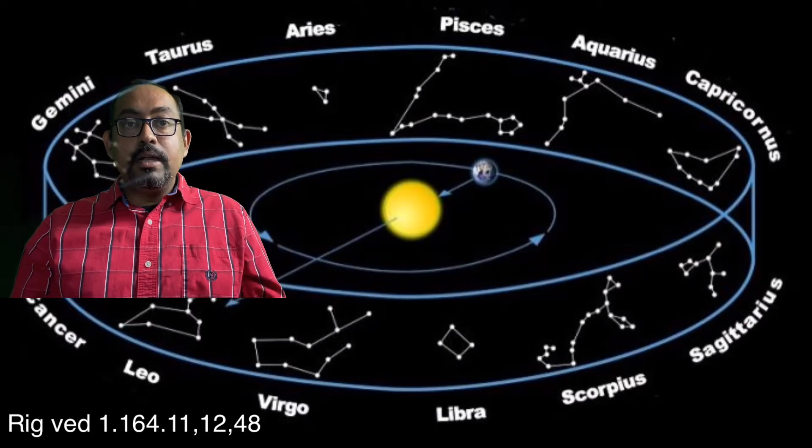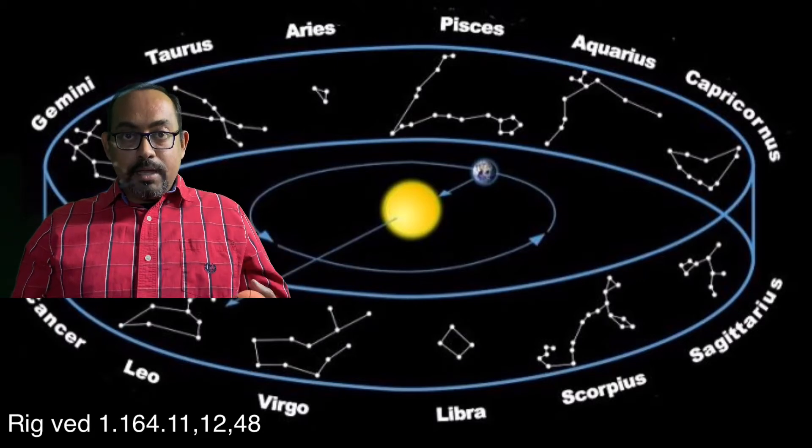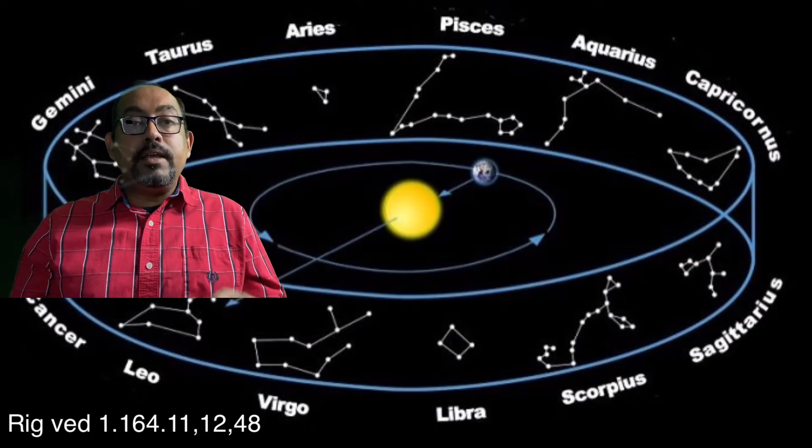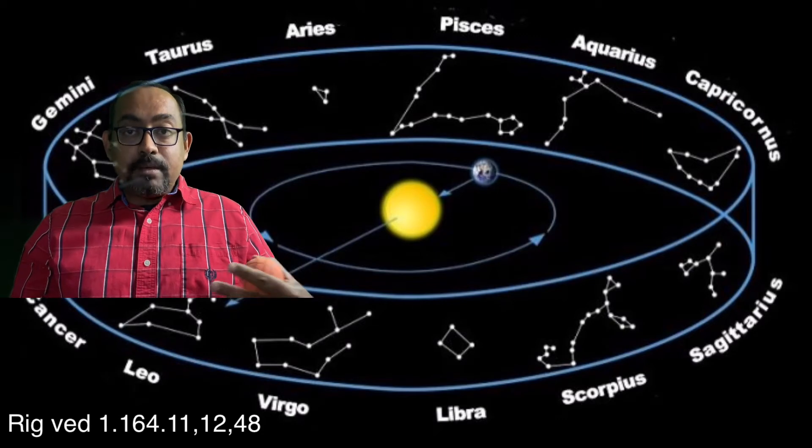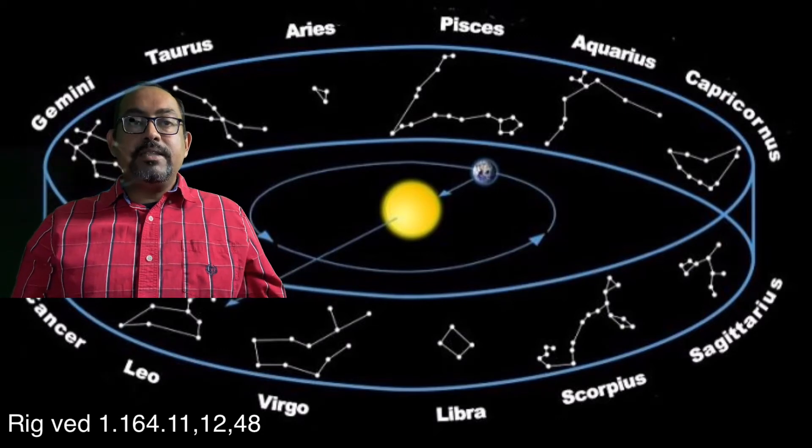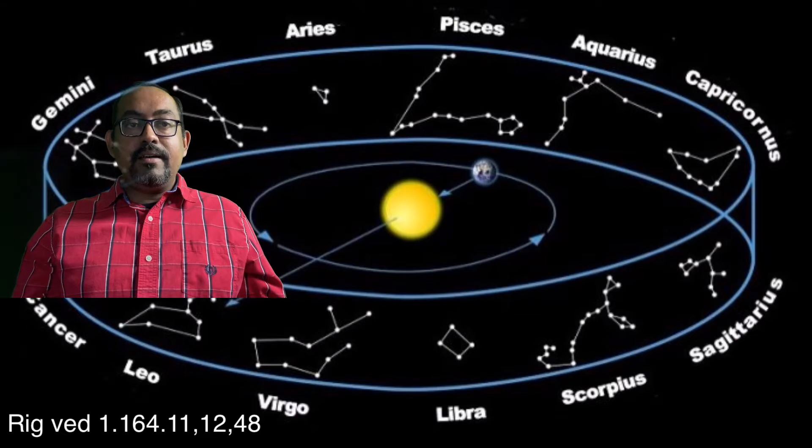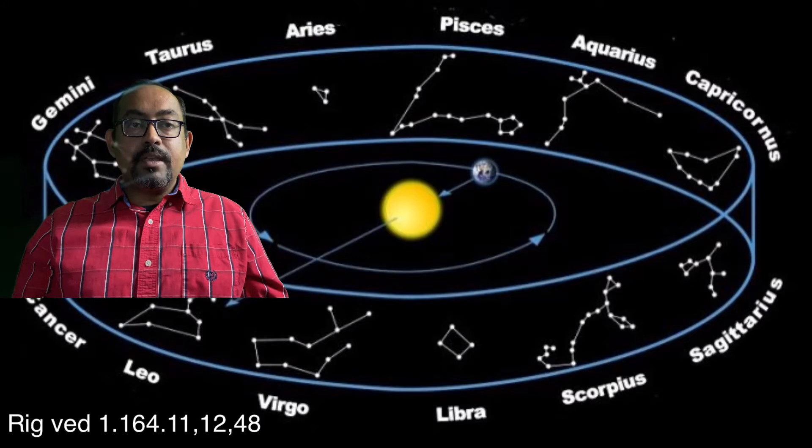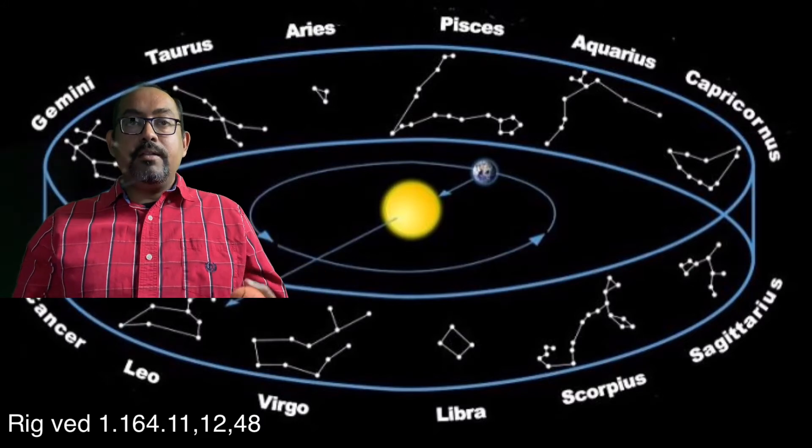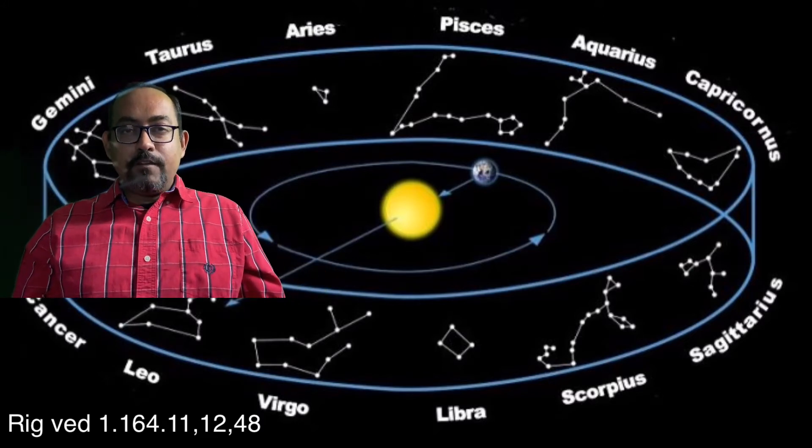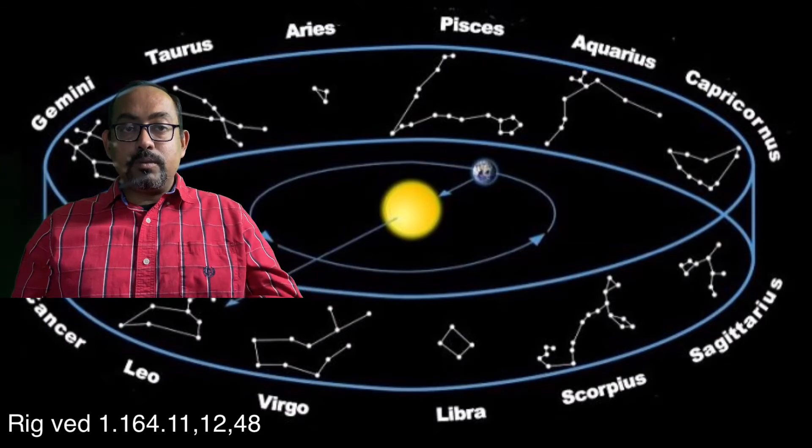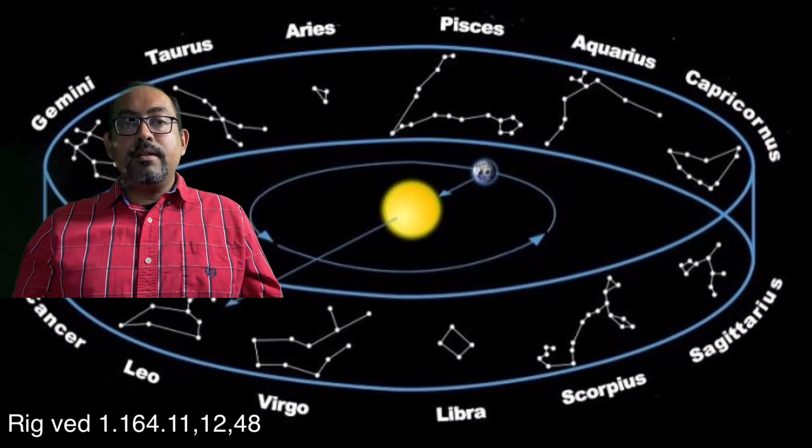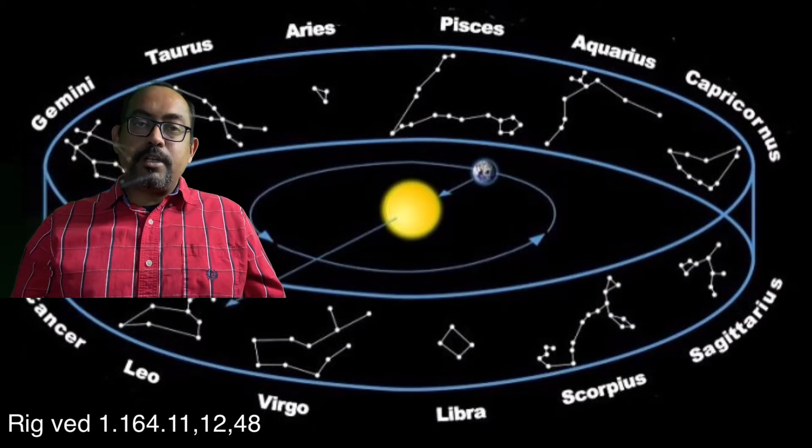Then you have atra, atra means here, this must be in the wheel. Sapta means seven which we already know, satani is hundred, and you have vinashtihi which is twenty. Then you have tatsu, it means have been standing. This is a finite verb in a principal class.